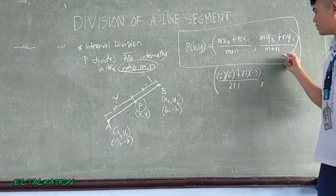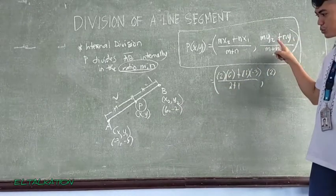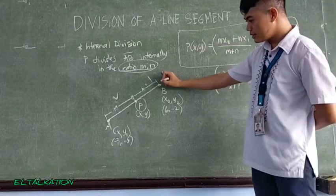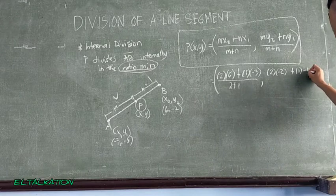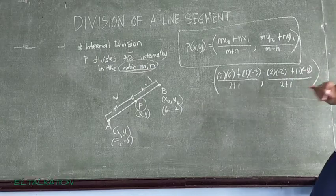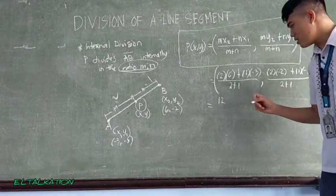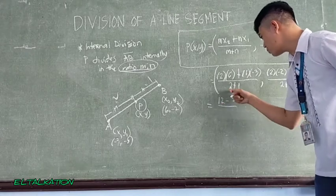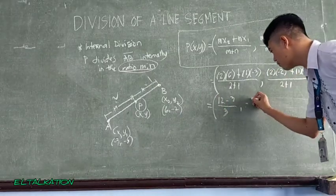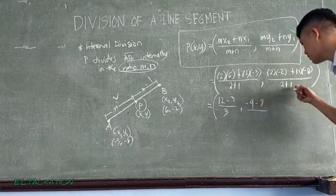To continue for the Y coordinates, so we have M which is 2 multiply to y of 2 negative 2, plus N which is 1 times negative 8, all over M plus N which is 3.